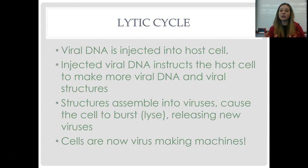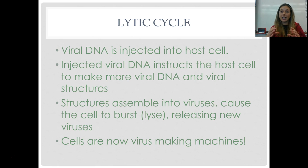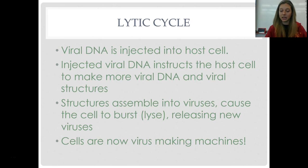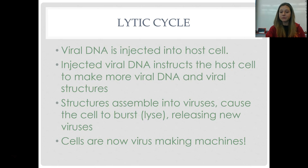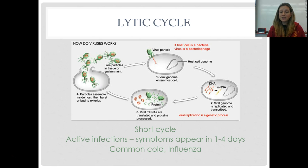In the lytic cycle, the virus turns your cells into virus-making machines. The virus attaches to the host cell's membrane, injects its DNA, and that DNA instructs your cell to make more viruses. Your own cells turn against you, making so many viruses that eventually the cell lyses — or bursts. All those viruses then find another cell, attach, inject DNA, and turn those cells into virus-making machines as well.